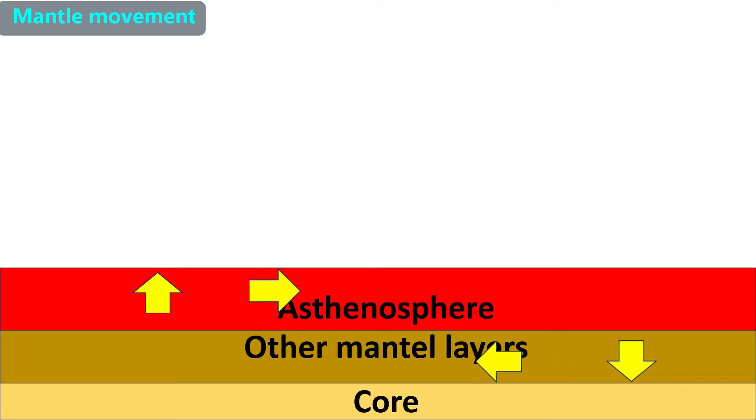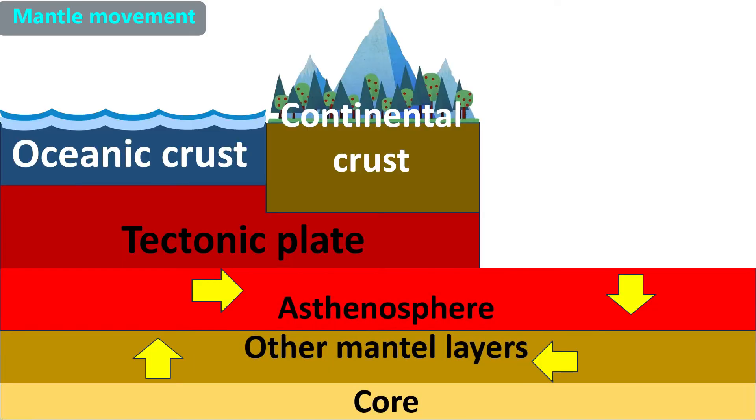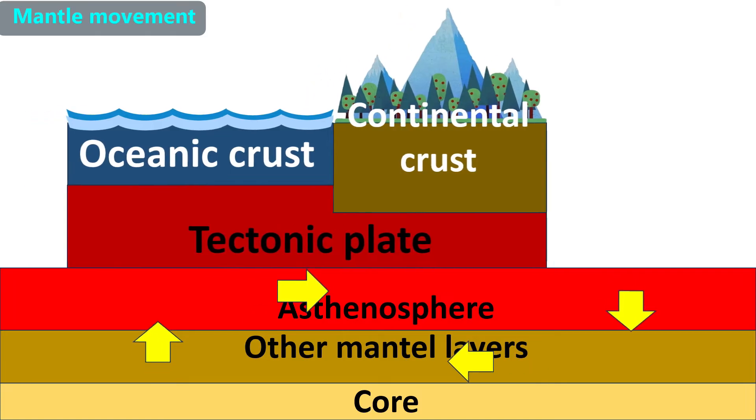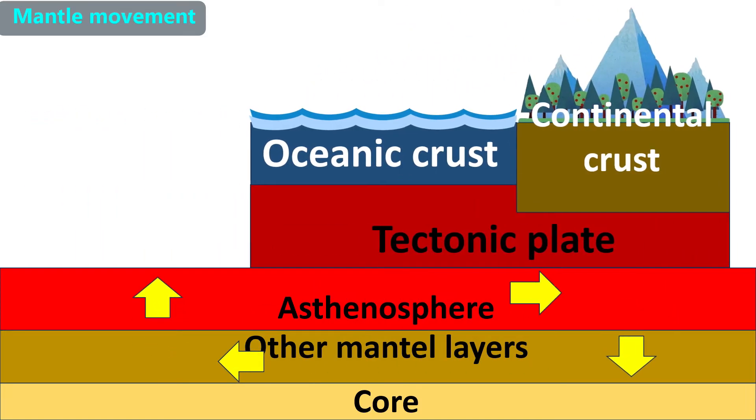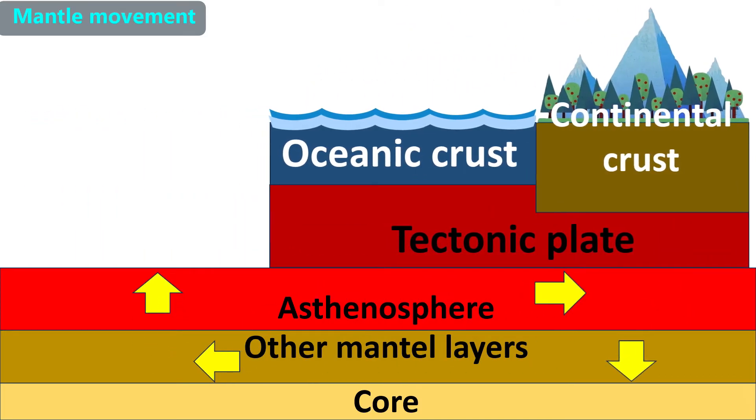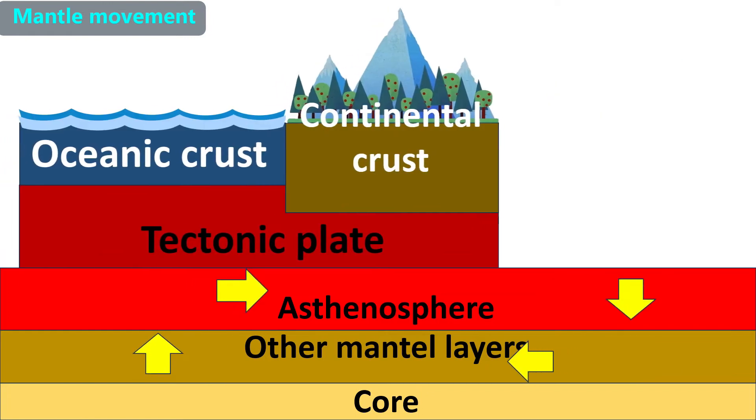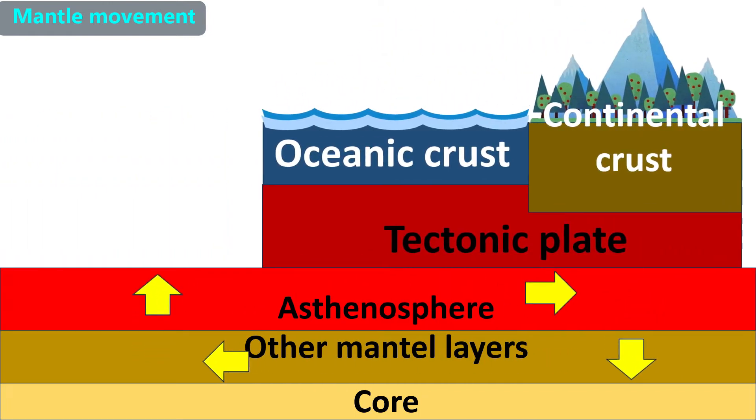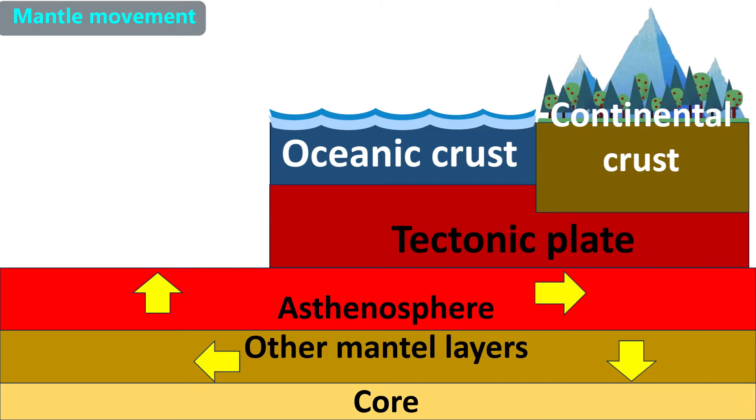The horizontal arrows show mantle moving to prevent gaps that otherwise would be made from the upward and downward mantle movements. When we put everything together, we see the upper horizontal arrow moves the tectonic plate. Depending on the region of mantle involved, it may take hundreds of millions of years to make one complete cycle. That may be why tectonic plates only move about an inch per year.